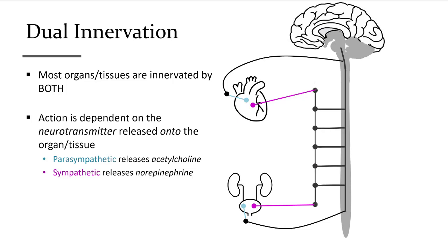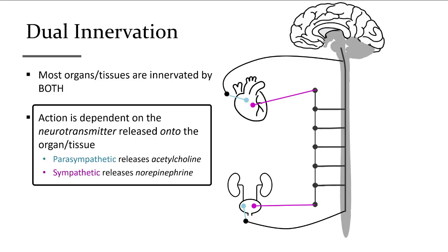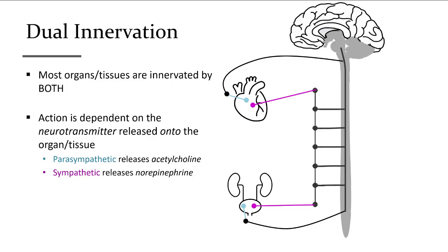The neurotransmitters will be discussed in another section, but just so you know ahead of time: the parasympathetic releases acetylcholine. When an organ gets acetylcholine it will respond in a parasympathetic manner. The sympathetic nervous system will ultimately release norepinephrine. When an organ or tissue gets norepinephrine, it will respond in a manner consistent with flight or fight. For instance, the heart will increase its rate when exposed to norepinephrine from the sympathetic nervous system, or it will slow down when exposed to acetylcholine from the parasympathetic.